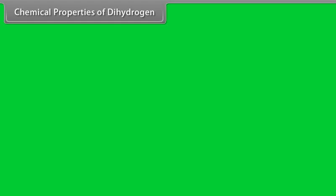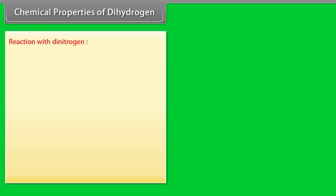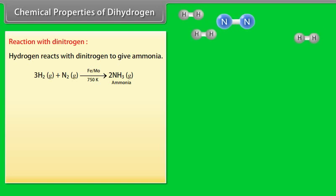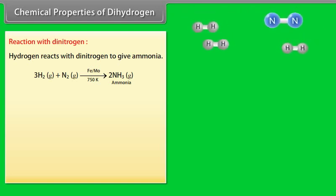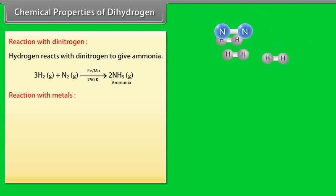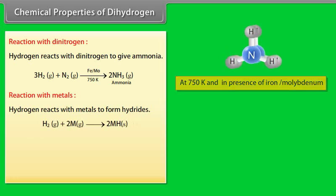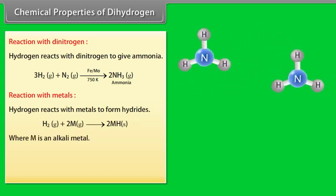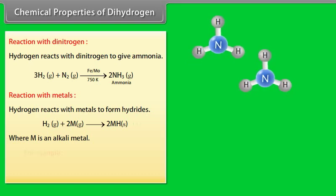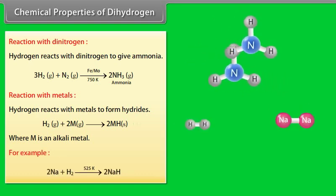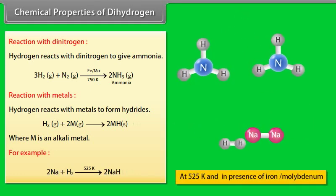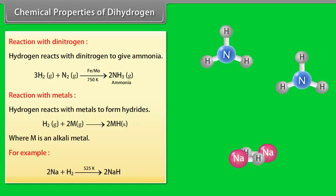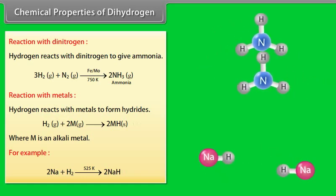Chemical properties of dihydrogen. Reaction with dinitrogen: Hydrogen reacts with dinitrogen to give ammonia. Reaction with metals: Hydrogen reacts with metals to form hydrides, where M is an alkali metal. For example, 2Na plus H2 on temperature 525 Kelvin gives 2NaH.